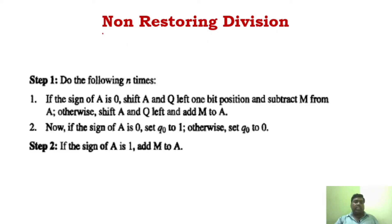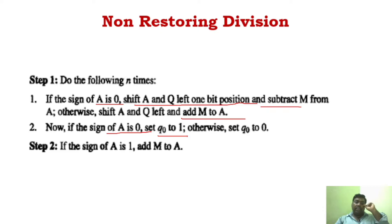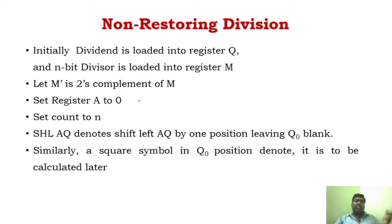These are the steps for non-restoring division. The first step: if the sign of A is 0, you shift A and Q left, then subtract. Otherwise, you add M to A. If the sign of A is 0, set Q-naught to 1; if the sign of A is 1, set Q-naught to 0. If you don't understand this first point, don't worry — we'll see an example to understand it clearly.